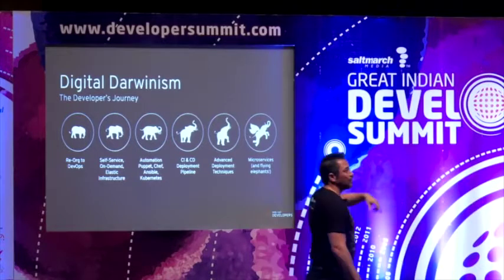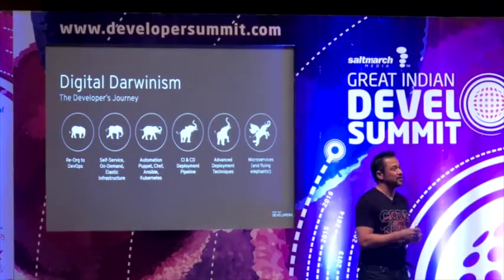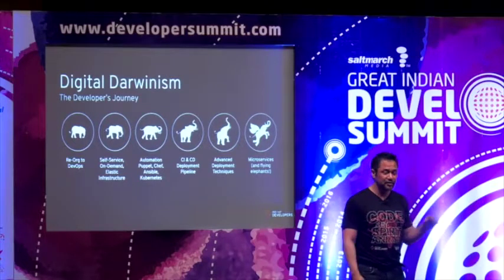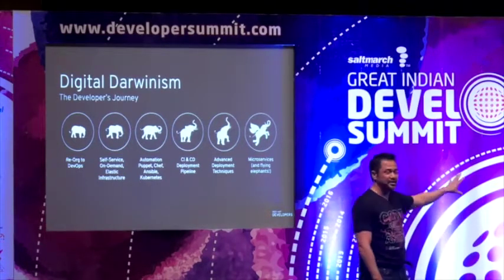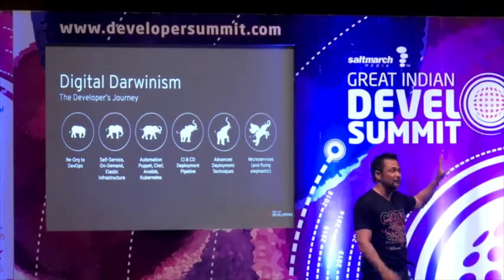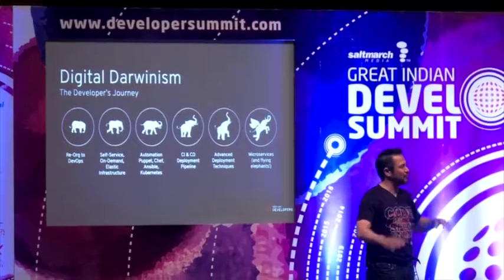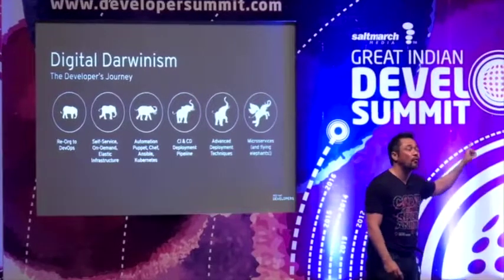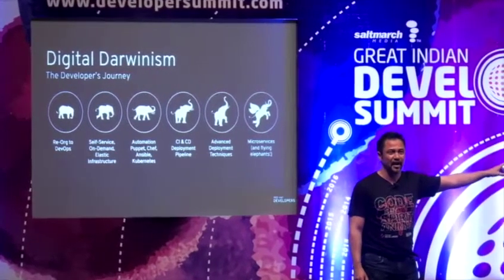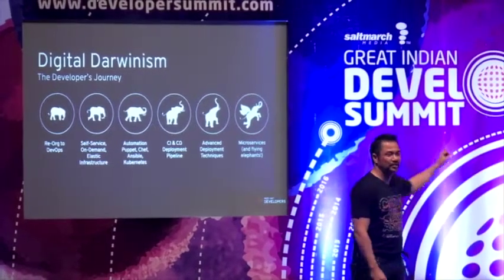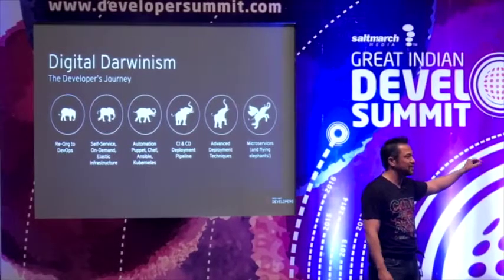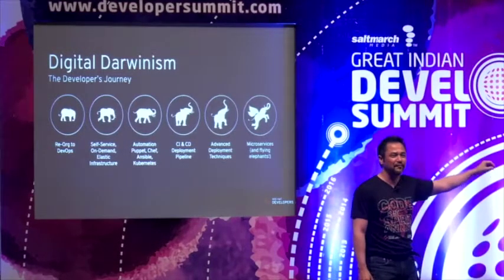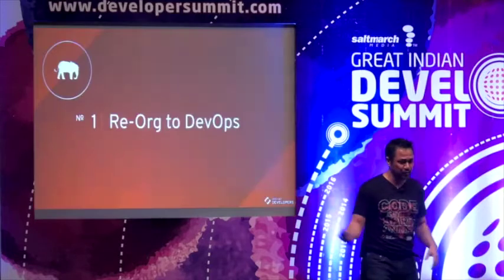This is the journey we're all on. We've got to start with DevOps — self-service on-demand elastic infrastructure, automation, and CI/CD. These are the different steps you need to go through before you get to microservices land. Most people want to shortcut this and jump directly into microservices, and they will hurt themselves. You will suffer great pain if you don't complete these prerequisites.